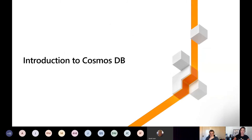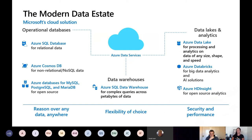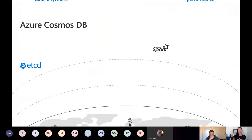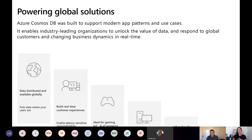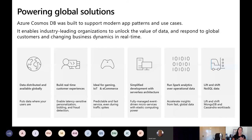Let's talk about Cosmos DB — this is part of our modern data state solution in Azure for non-relational and NoSQL types of data. Cosmos DB is globally distributed and we have APIs you may be familiar with: Cassandra, Spark, MongoDB, and Gremlin. We use Cosmos for powering global solutions and real-time customer experiences. Because it's globally distributed and writes so quickly, it's great for gaming, IoT, and e-commerce sites. It's a simplified development process with serverless architecture and is a fully managed service.